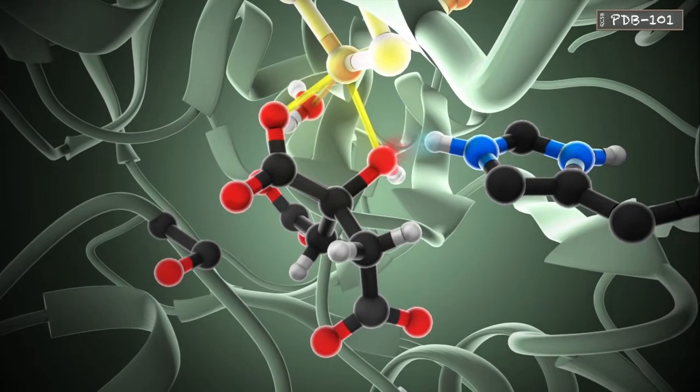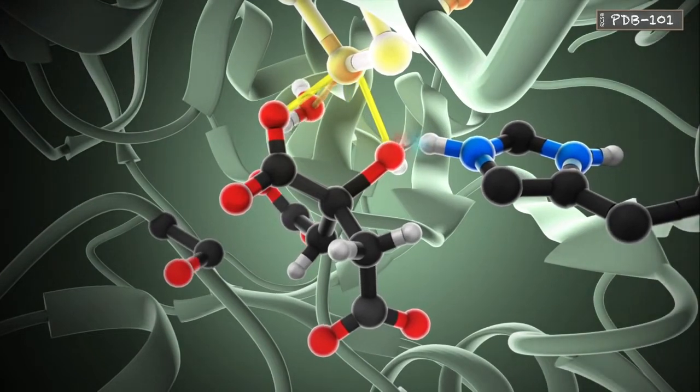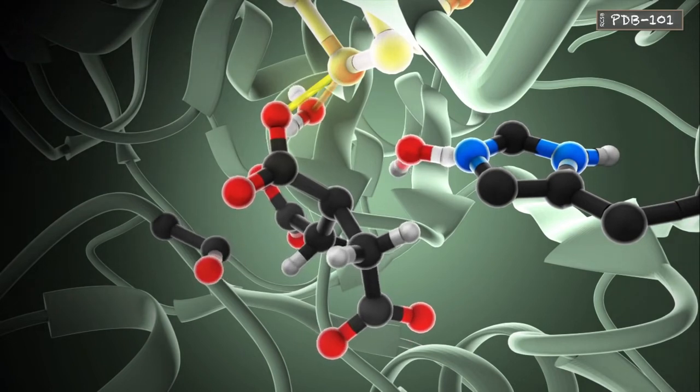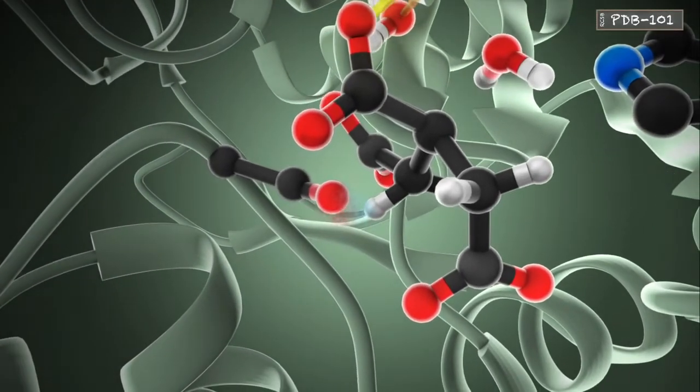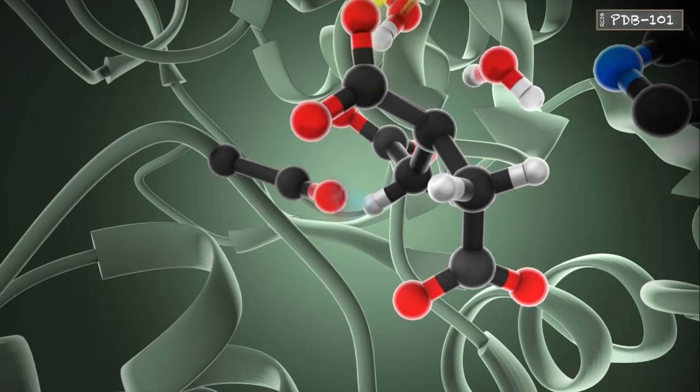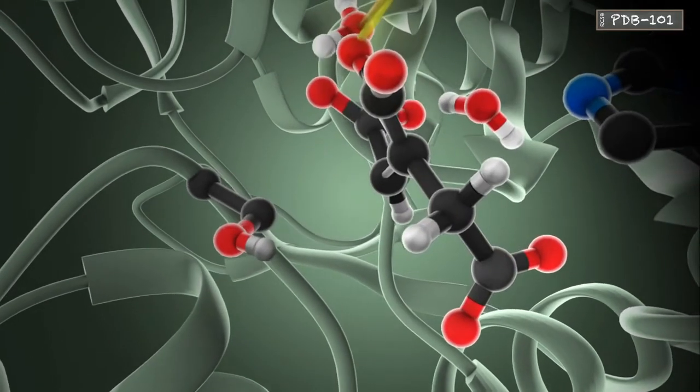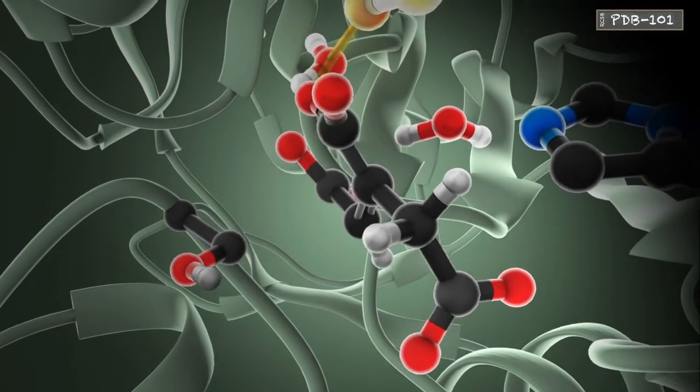The first step in the reaction is dehydration. In this step, histidine acts as an acid and protonates the hydroxyl on the substrate, allowing it to leave as a water molecule. Serine then acts as a base, extracting a hydrogen atom from the opposite side of the substrate, forming the intermediate cis-aconitate.